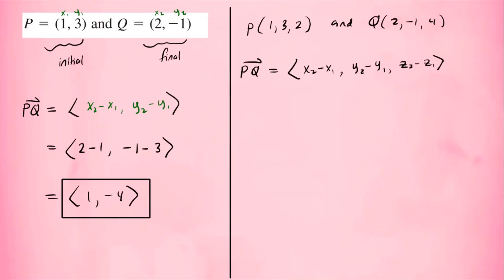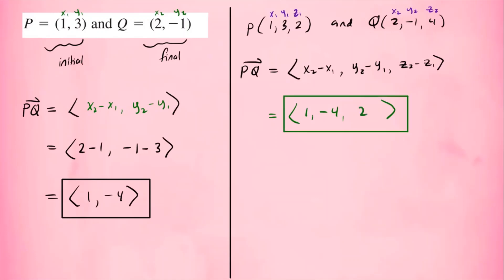Similarly to the 2D problem, we label the coordinates x1, y1, z1 for p and x2, y2, z2 for q. We already know x2 minus x1 is 1 and y2 minus y1 is negative 4. Now z2 minus z1 is 4 minus 2, which equals 2. So our vector p to q is (1, −4, 2), and those are the components of this vector.